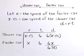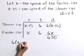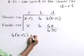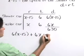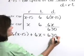So as step three, let's write our equation. The sum of the distances is 630. So 6 times x minus 15 plus 6 times x is equal to 630.